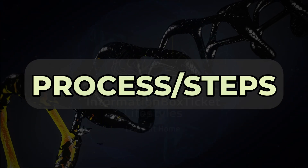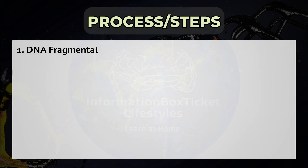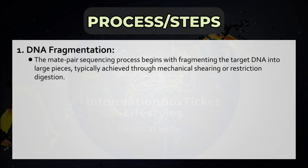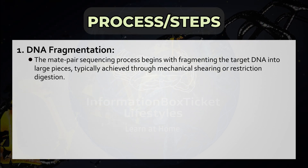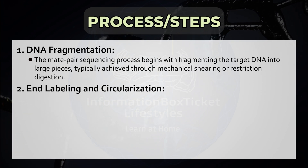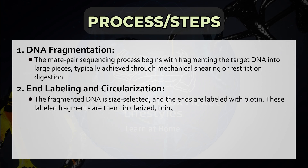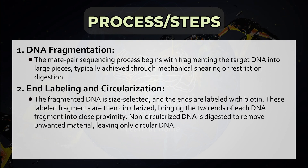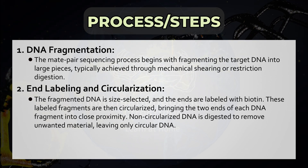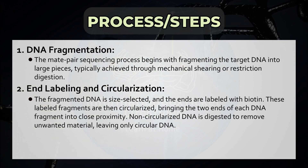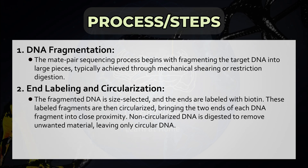Process Steps of Mate Pair Sequencing. Step 1: DNA Fragmentation. The mate pair sequencing process begins with fragmenting the target DNA into large pieces, typically achieved through mechanical shearing or restriction digestion. Step 2: End Labeling and Circularization. The fragmented DNA is size-selected and the ends are labeled with biotin. These labeled fragments are then circularized, bringing the two ends of each DNA fragment into close proximity. Non-circularized DNA is digested to remove unwanted material, leaving only circular DNA.